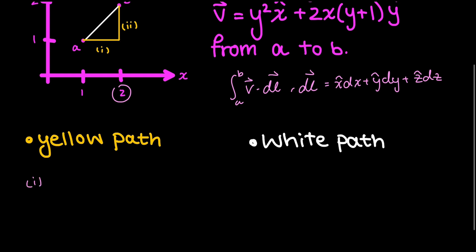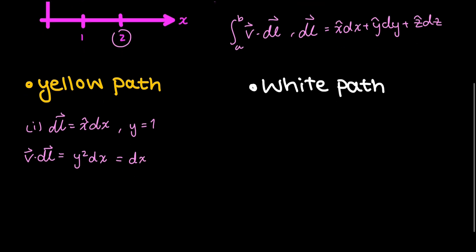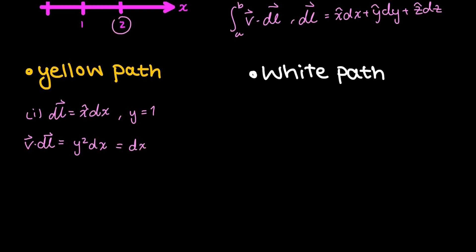Let's start by looking at segment one, which is just the horizontal piece. Because it's horizontal and only changes with respect to x, dl is just x-hat dx because y is constant. In this case, y is equal to 1. So v·dl is just y² dx, and since y is constant and equal to 1, this is just dx. Evaluating the line integral of that segment gives us the integral of dx from 1 to 2, which is just 1.